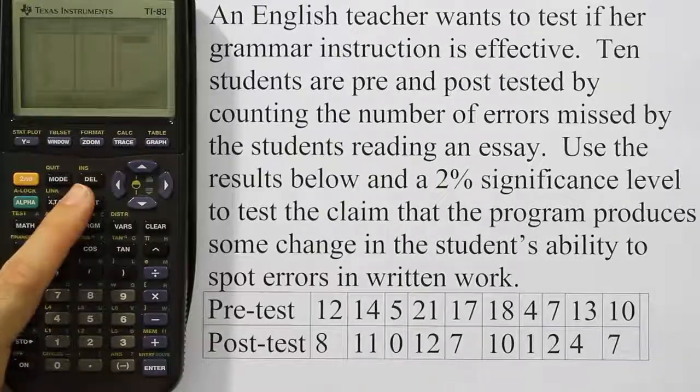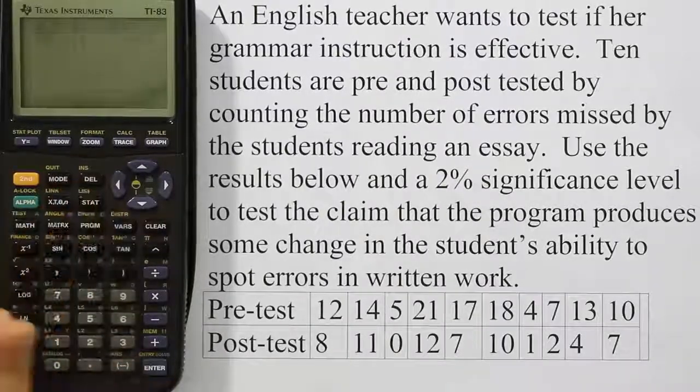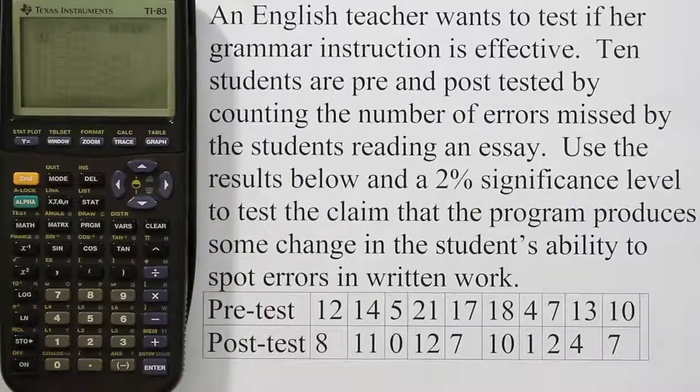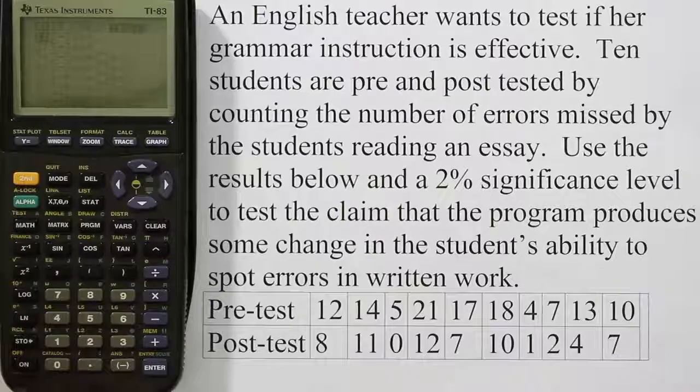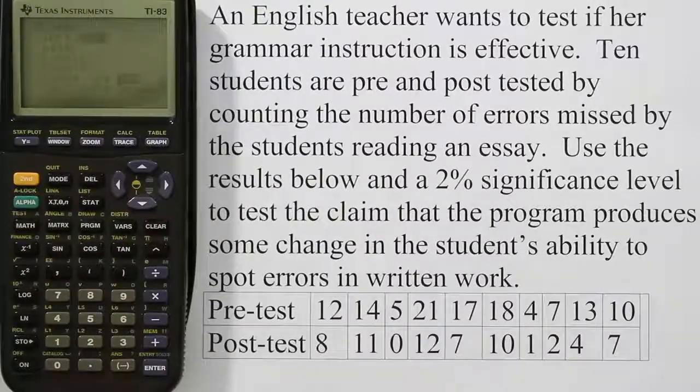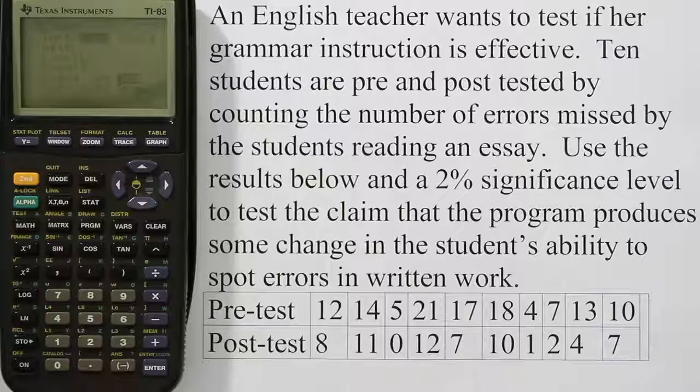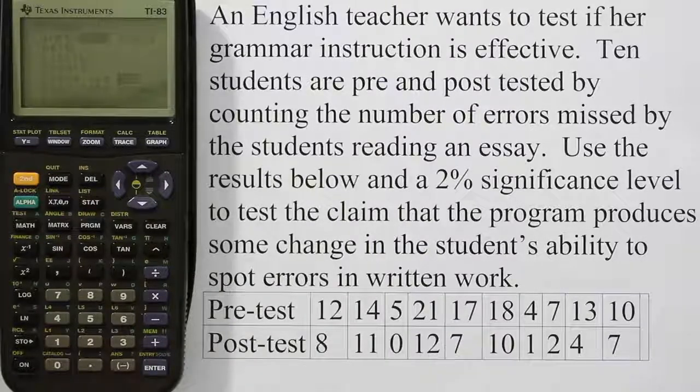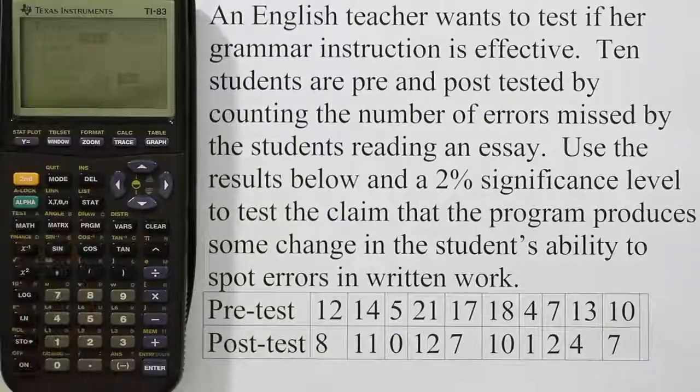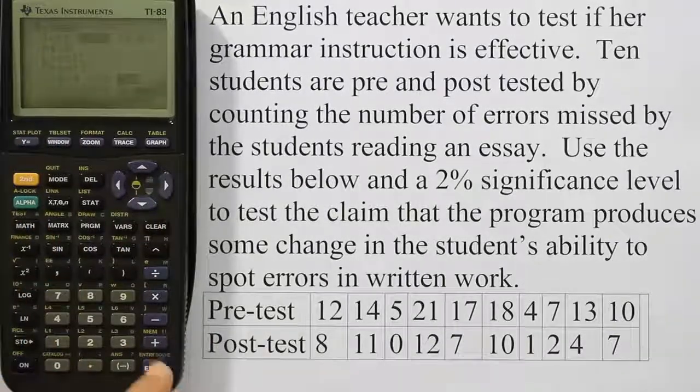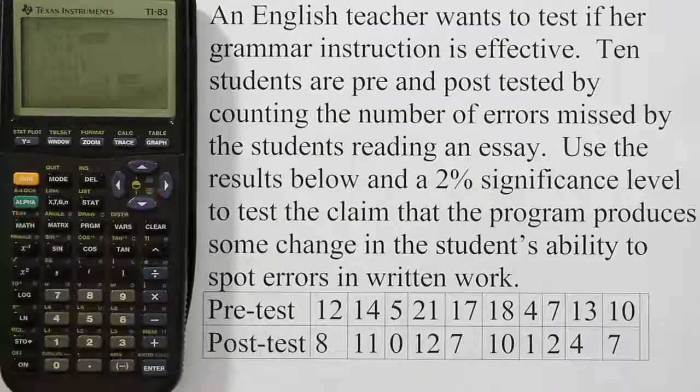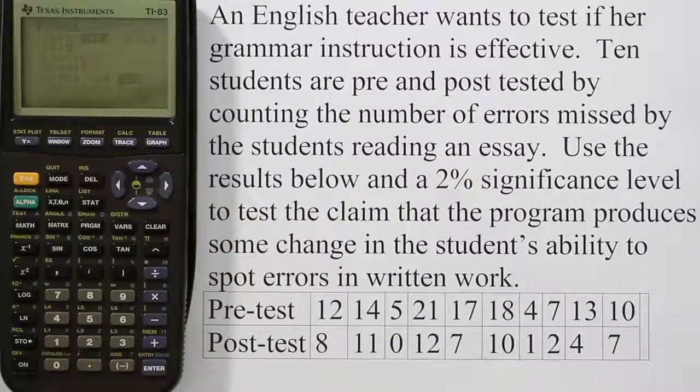We're going to press the stat key one more time. You're going to arrow over to where it says test and you're going to go to where you see the t-test which is option number 2. Arrow down to 2 and hit enter. In this case, we're going to actually use the input as data because our input is stored in list 3. Our data is in list 3. So we're going to leave it on data or if it's not on data, you're going to go to where your data is and hit enter.